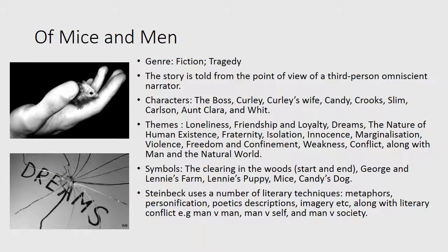Just a couple more points on the text. The genre is fiction tragedy. The story is told from the point of view of a third-person omniscient narrator who can access the point of view of any character as required by the narrative. There are a number of characters including the boss, Curly's wife, Curly, Candy, etc. Many themes are prevalent in the novel: loneliness, friendship, marginalization, freedom and confinement, along with man and the natural world, to name a few.